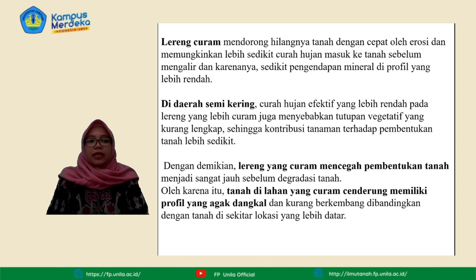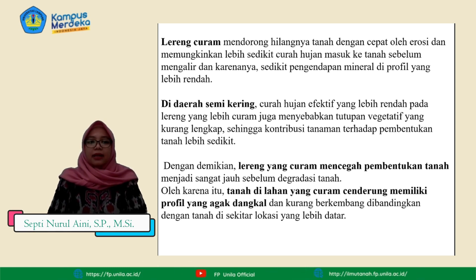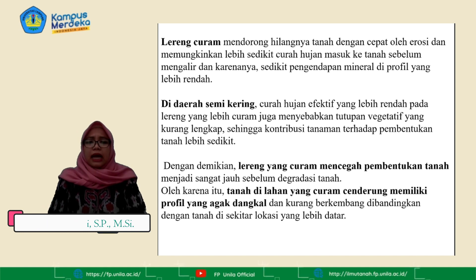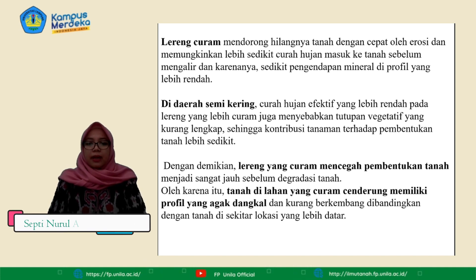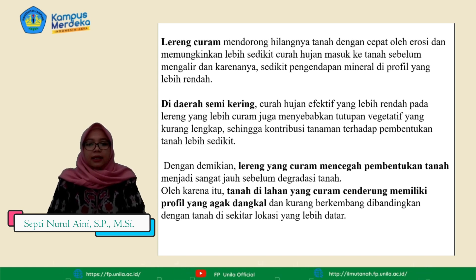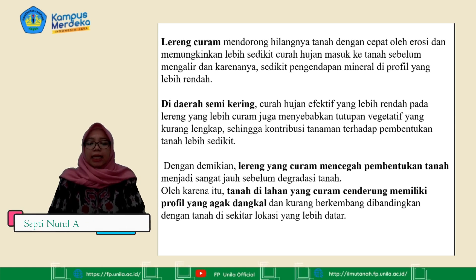Di daerah semi kering, curah hujan efektif yang lebih rendah pada lereng yang lebih curam juga menyebabkan tutupan vegetasi yang kurang lengkap, sehingga kontribusi tanaman terhadap pembentukan tanah lebih sedikit. Dengan demikian, lereng yang curam mencegah pembentukan tanah menjadi sangat jauh sebelum degradasi tanah. Oleh karena itu, tanah di lahan yang curam cenderung memiliki profil yang agak dangkal dan kurang berkembang bila dibandingkan dengan tanah di sekitar lokasi yang lebih datar.